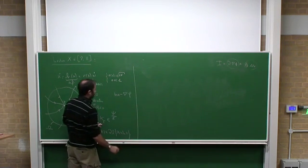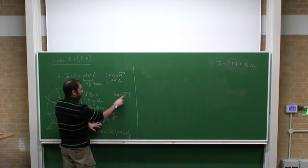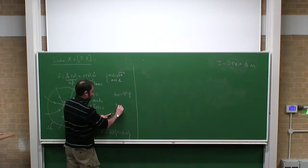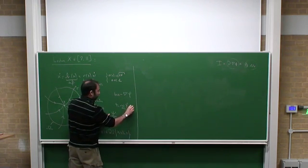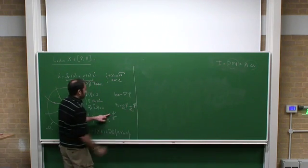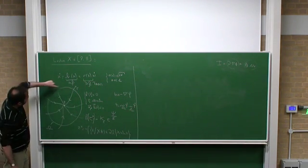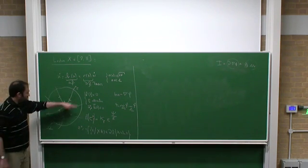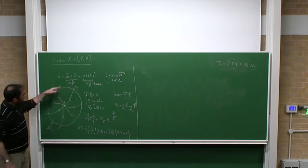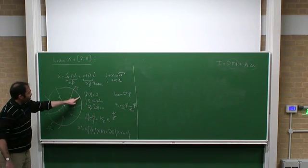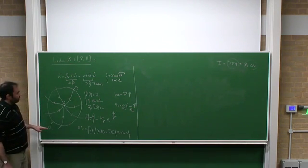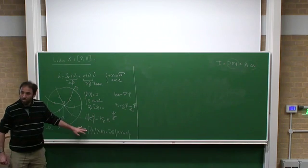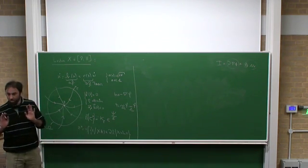For the mean first passage time, in the limit of small epsilon asymptotically, there was a constant k-epsilon times exponential of psi divided by epsilon. Psi was related to the minimum when b was the gradient of a potential phi. Then psi was something like the minimum of phi on the boundary minus the minimum of phi inside, which was achieved at p0.